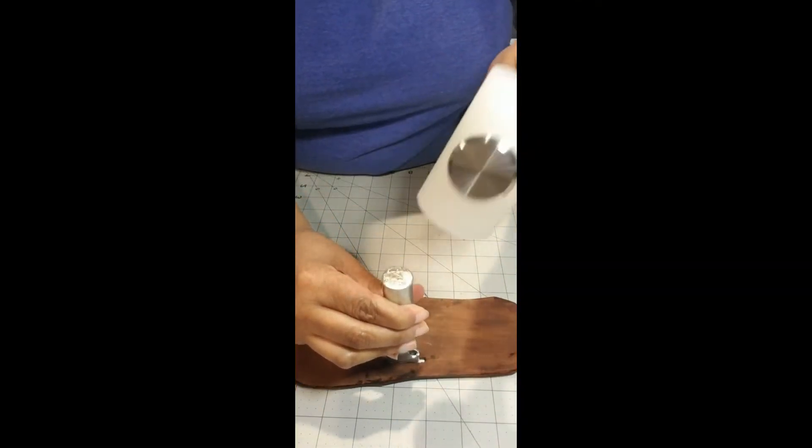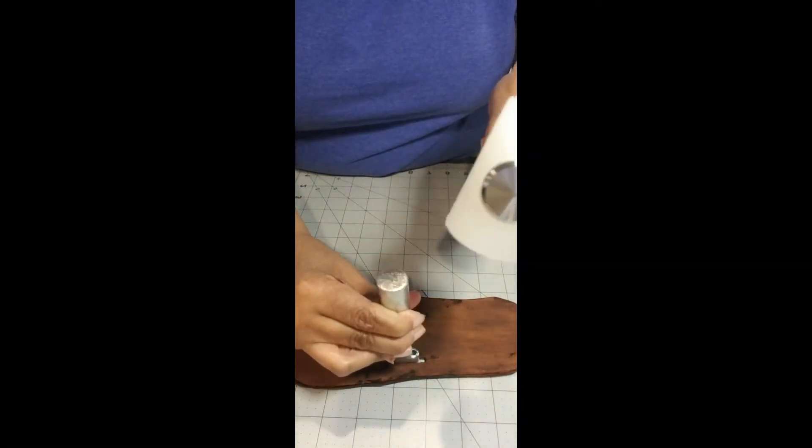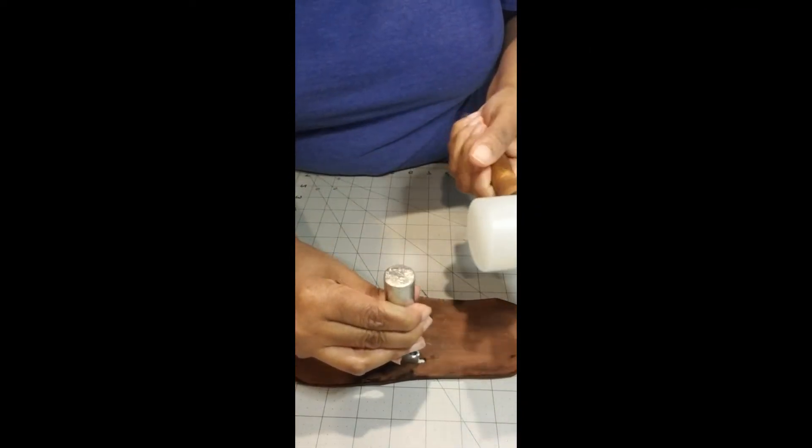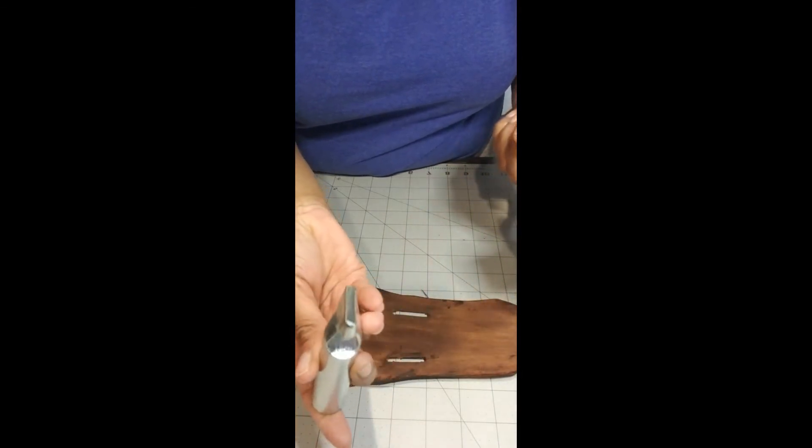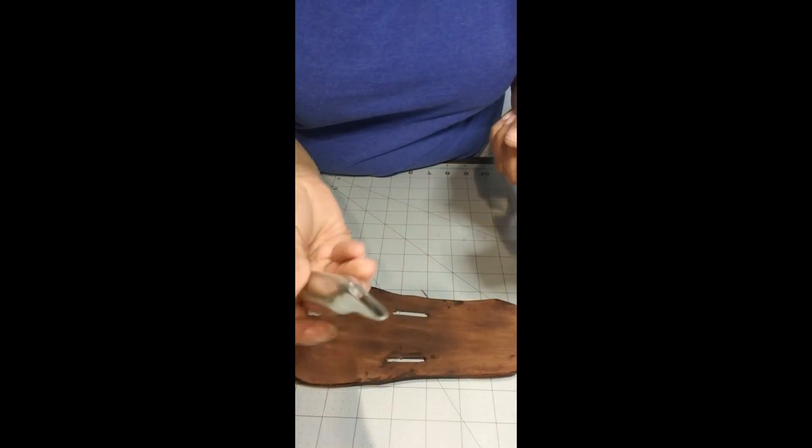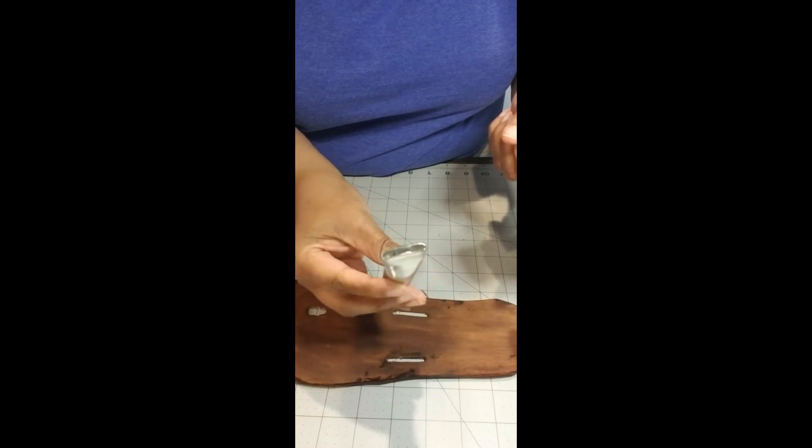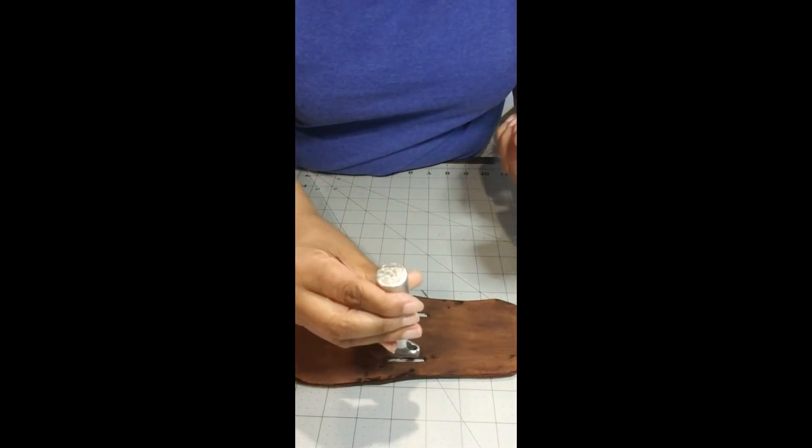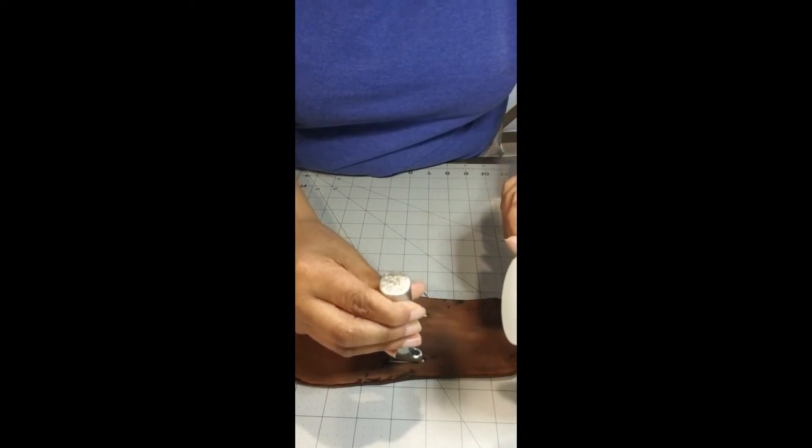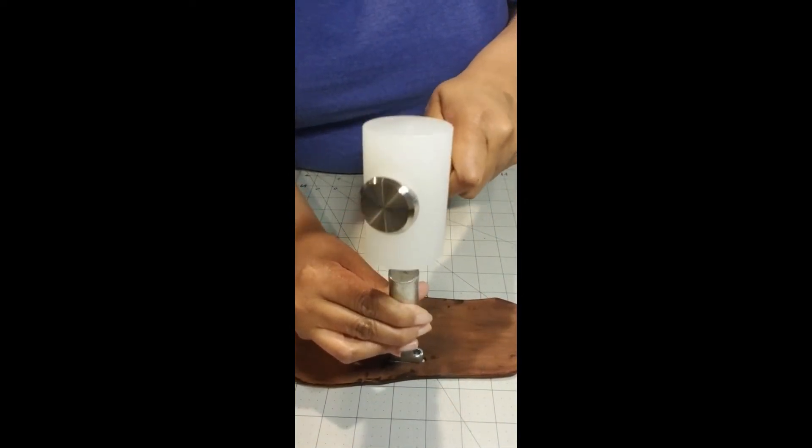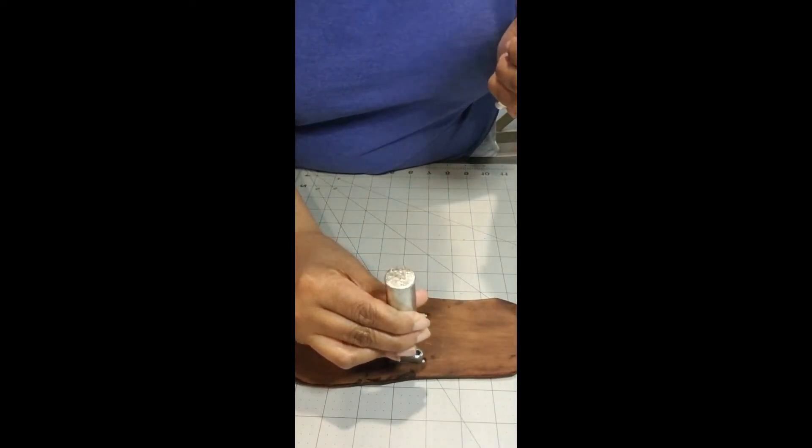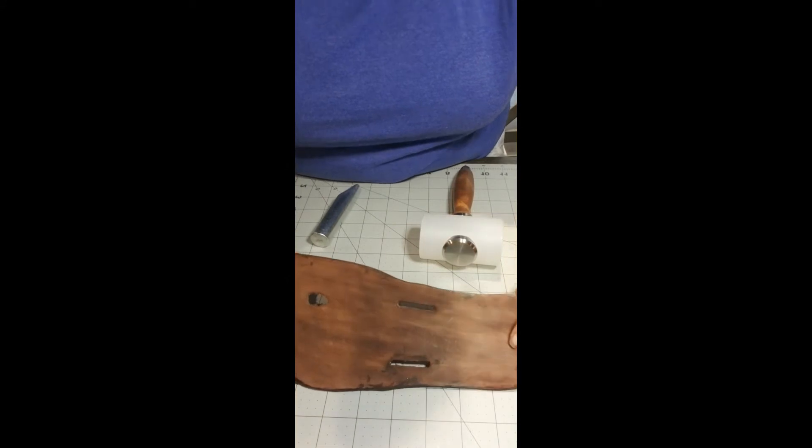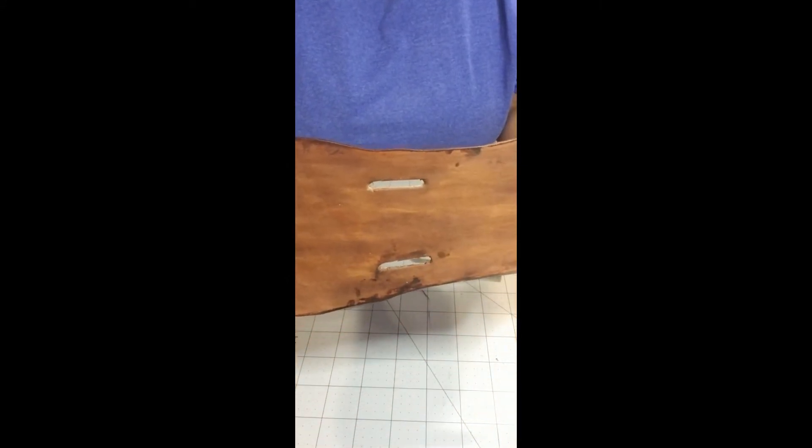This is what you use to put holes in your vegetable tan leather. This is an oval cutter for the slits. You take your soft mallet and you hit it, and it will make the holes in your vegetable tan like so.